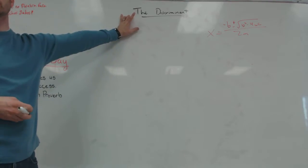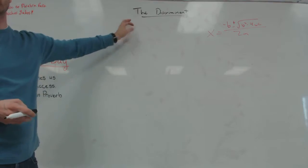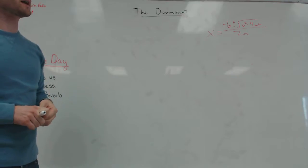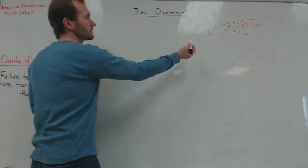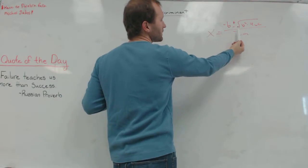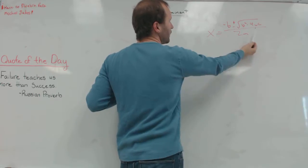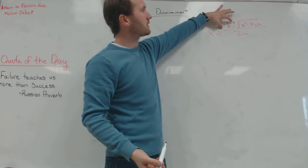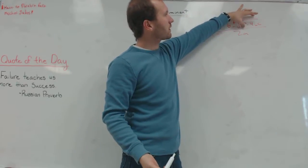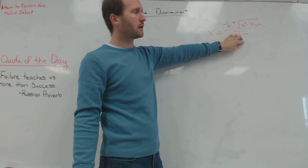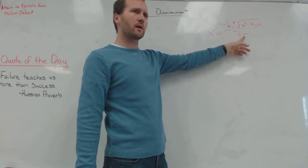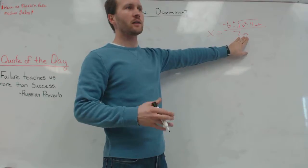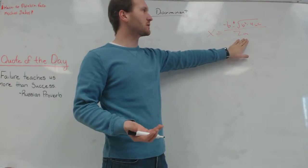The discriminant refers to a specific part of the quadratic formula — a part that helps us figure out something about our quadratic. Looking at the quadratic formula, negative b plus or minus the square root of b squared minus 4ac, over 2a, we can see three parts: negative b, the square root expression, and 2a. If a is 0, the quadratic formula doesn't work, and you don't actually have a quadratic because there's no x squared term.